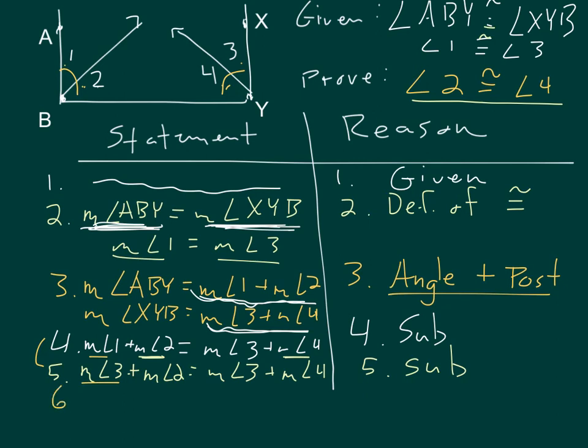Now, hopefully, you're starting to see, okay, I have a 3 on this side, a 3 on this side. I can subtract that from each side and get the measure of angle 2 is equal to the measure of angle 4. That was the subtraction property of equality.